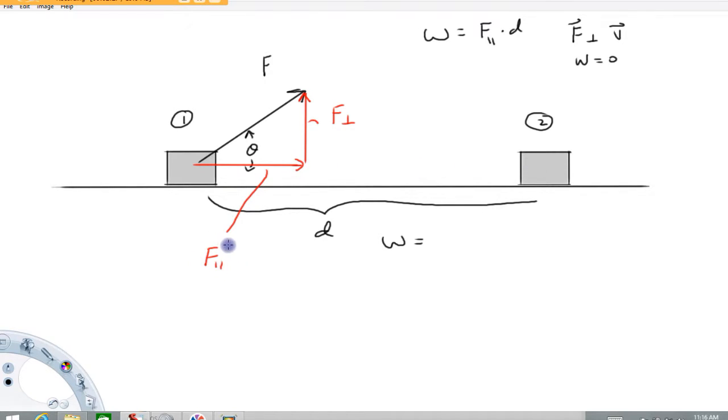Now this component is adjacent to the angle theta. Therefore its magnitude is f cosine theta. So that represents the component of this force vector that is parallel to the motion. And then I'm just going to multiply by distance. And there you have it.